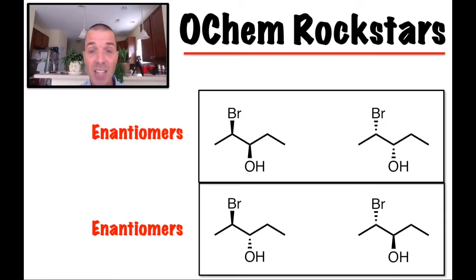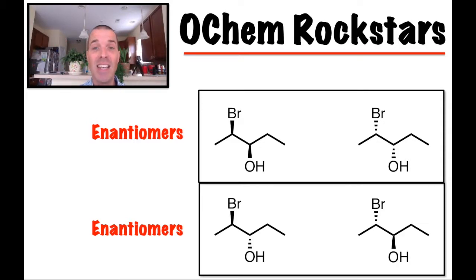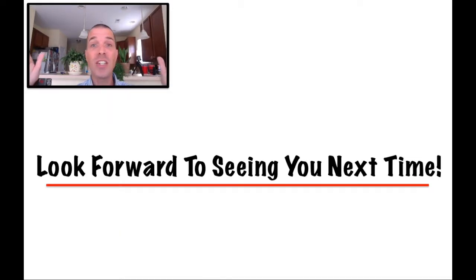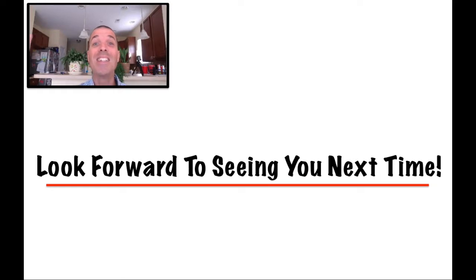The key thing I want you paying attention to is enantiomers: when you look at two structures, did everything change? If you have to draw structures, you change every single center. As always, this was a quick lecture. Thank you so much for taking time out of your day to watch this so I can help you crush your organic chemistry class. Until next time, I hope you all have a good one.